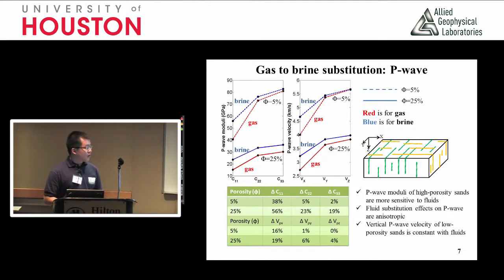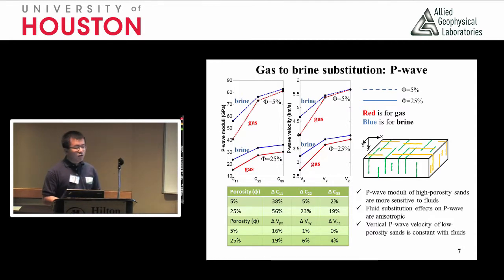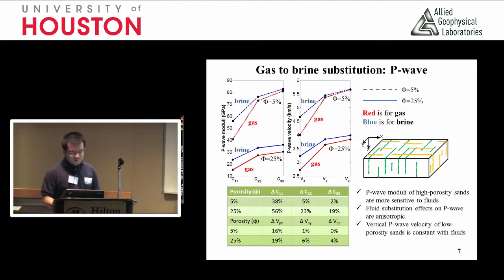Of course we will see different behavior of the P-wave traveling in directions parallel to the fractures. The magnitude of this influence is actually defined by the fractures, all related to the fracture weakness parameters. So the fluid substitution effects on the P-waves are actually anisotropic. We can use the observation that vertical P-wave velocity doesn't change for low-porosity sands as an estimate for the background rock matrix P-wave.